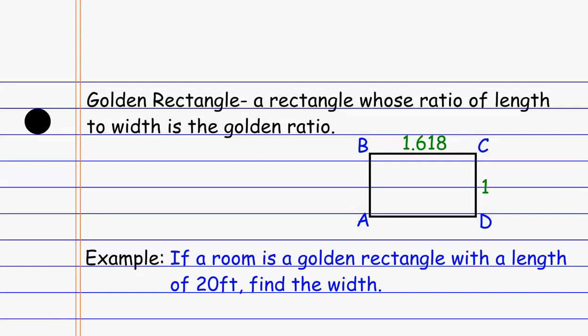It's interesting — if you look at a group of rectangles and one of them is a golden rectangle while the others are not, and you're asked which one you like the best, 9 times out of 10 human beings will pick the one with the golden ratio. It's just the one that's the most visually appealing in terms of the size of the rectangle.